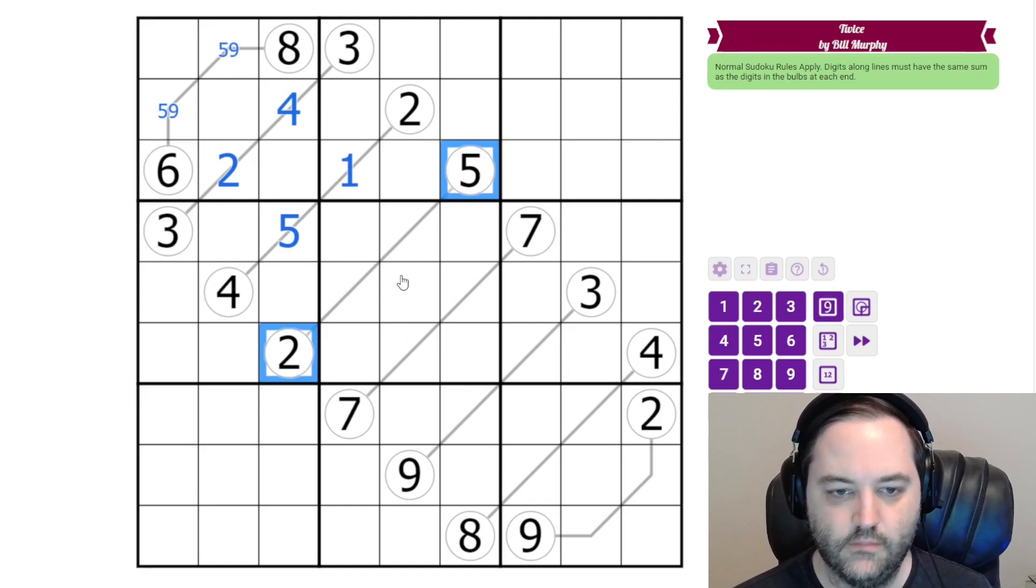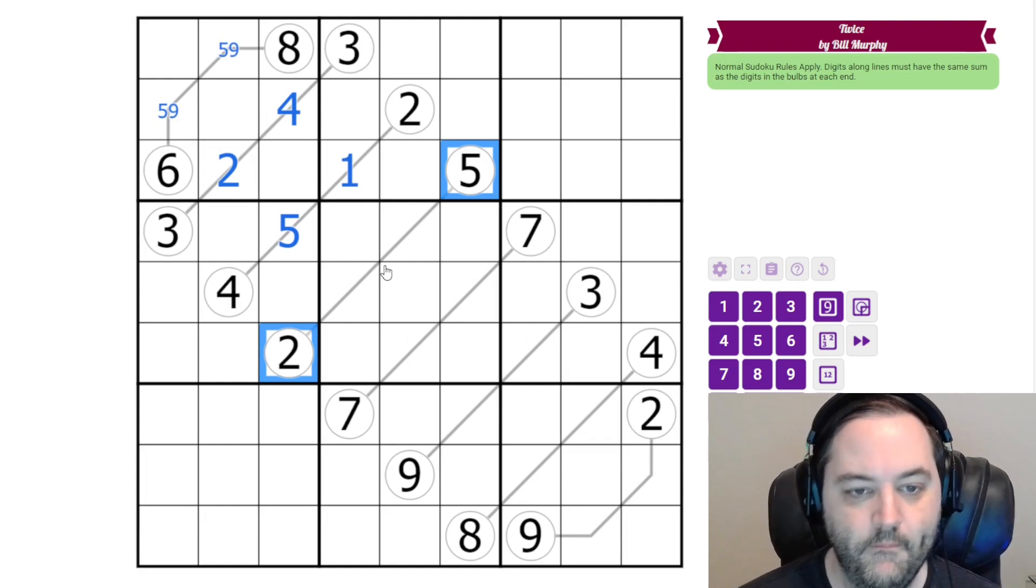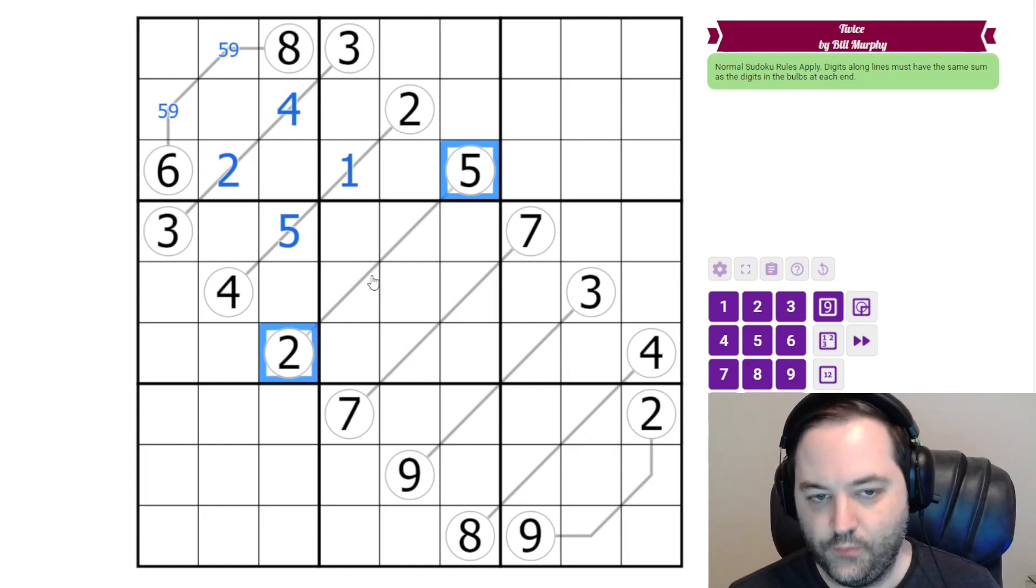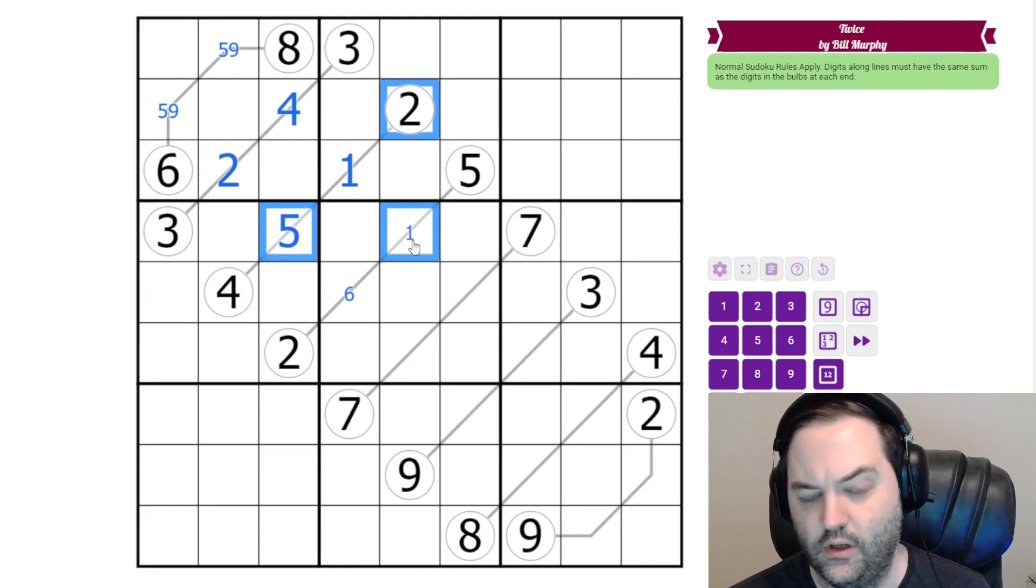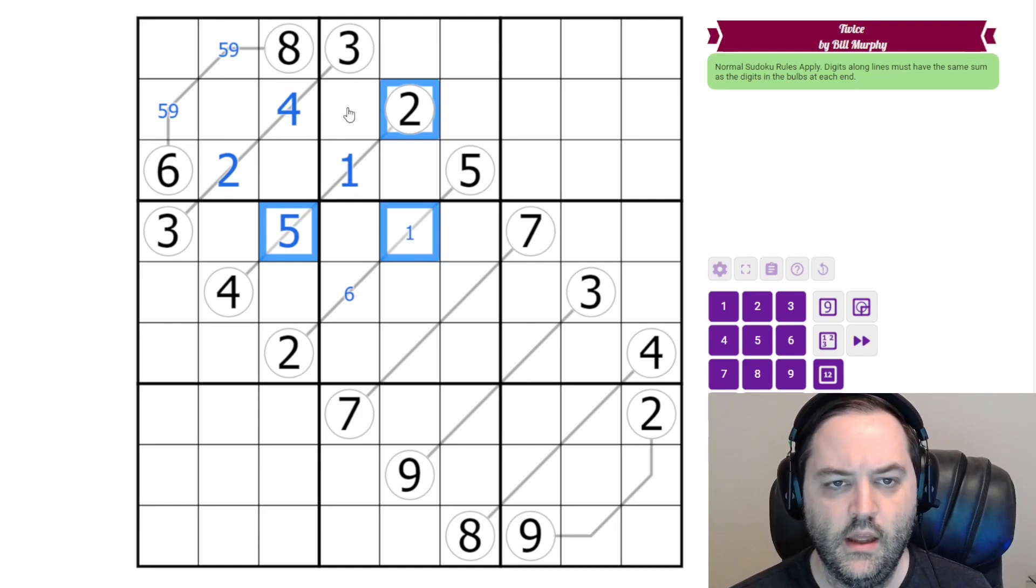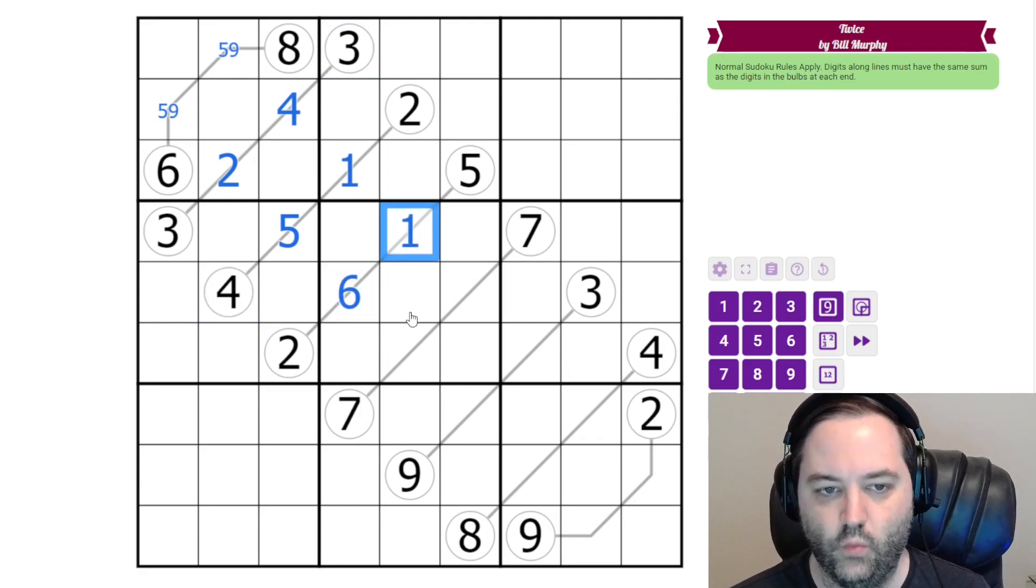Here we have two five, so that's a sum of seven. There are three ways to do that. One of them is one six. That's possible but it would have to be in this order. Two five is another one but this cell sees both two and five. So we can't put two five in both of these cells because this one can't be either digit. The same is true for three and four with this cell. So in fact the only thing we can have is six one.